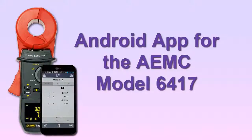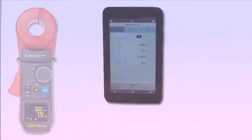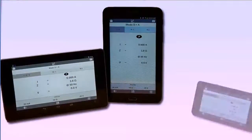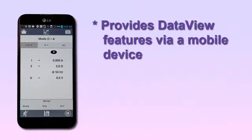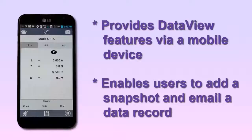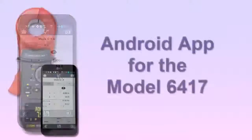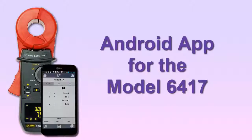The new Ground Tester 6417 app, distributed through the Google Play Store, enables users of the AEMC Clamp-on-Ground Resistance Tester Model 6417 to work with the instruments from an Android device. This app provides a handy mobile option for working with a Model 6417. Through an intuitive and simple interface, the app provides many of the same features available in AEMC's Data View data analysis software, accessible through a handheld mobile device. The app also takes advantage of functionality provided by the Android platform, including the ability to add a snapshot to a data record and email one or more records to others in report format. In this video, we briefly introduce the Ground Tester 6417 app.